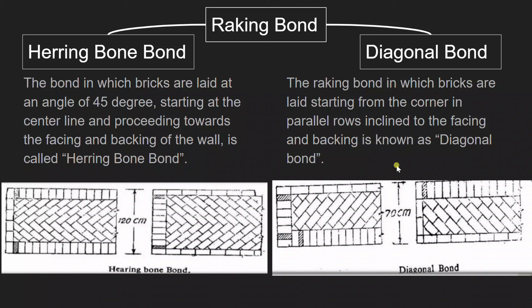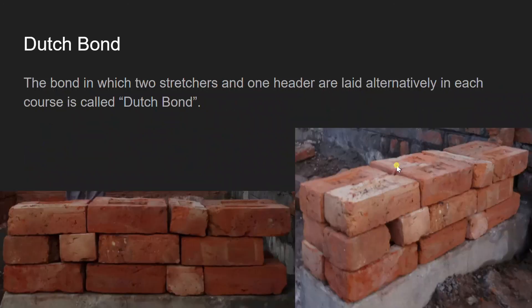The images make the definitions even more clear. Next we have Dutch bond. In this bond, we have two stretchers and one header laid alternatively in each course. As the images show, we have two stretchers then a header, two stretchers then a header, in each and every course.